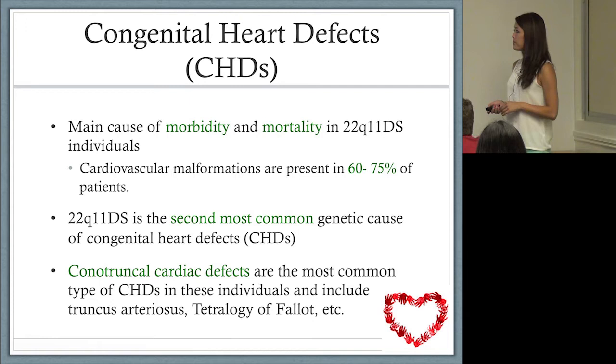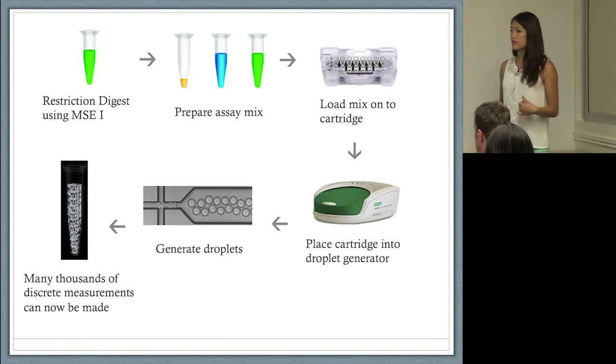This is the second most common genetic cause of congenital heart defects, second after Down syndrome. Conotruncal cardiac defects are the most common types of CHDs—these are outflow tract defects. Basically anything that has to do with the great veins and great arteries of the heart.